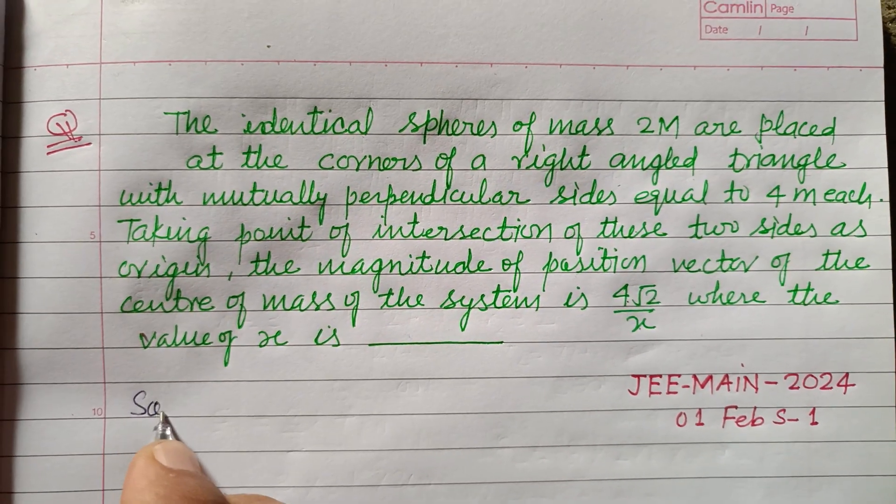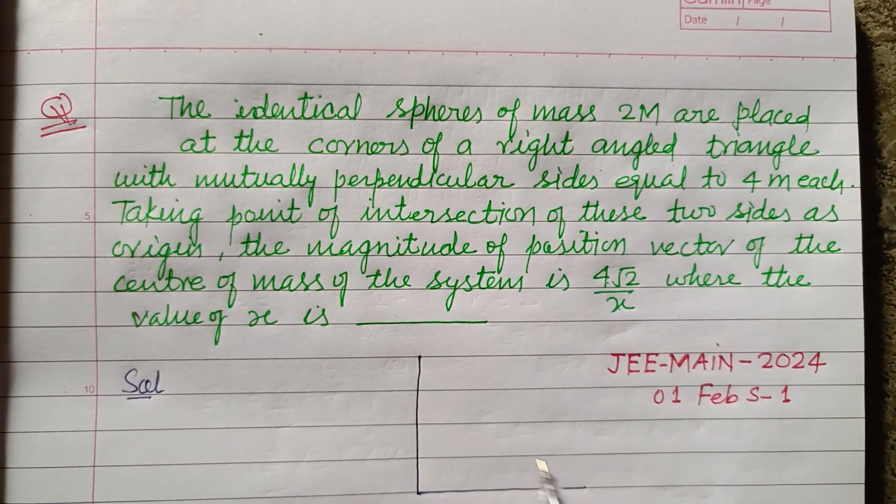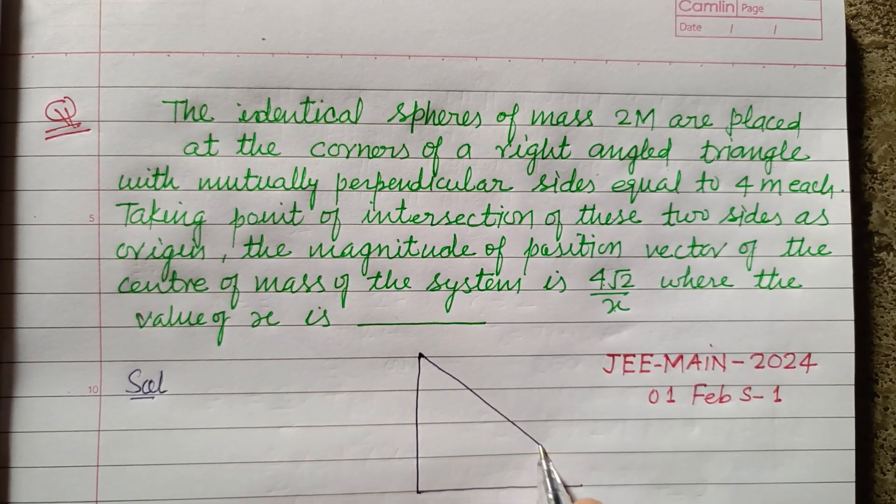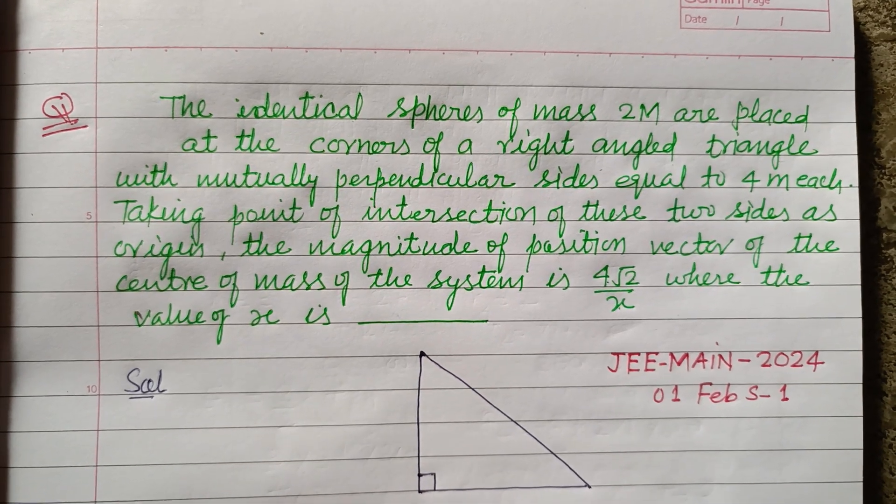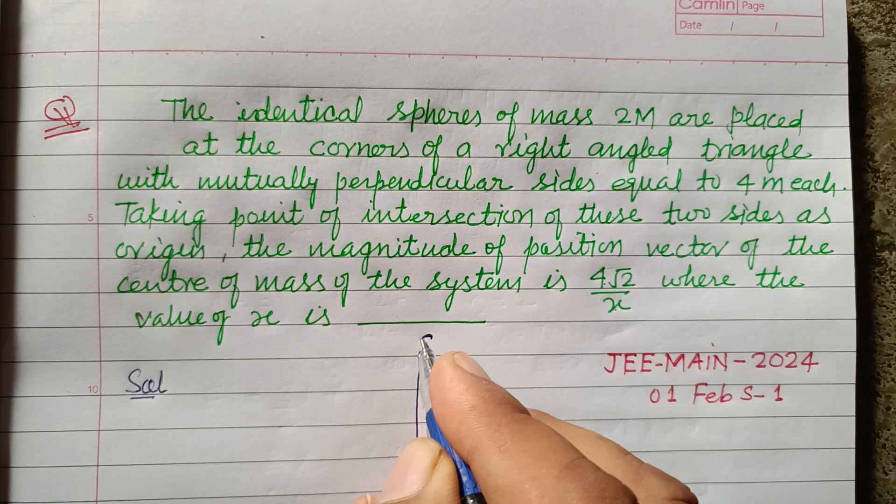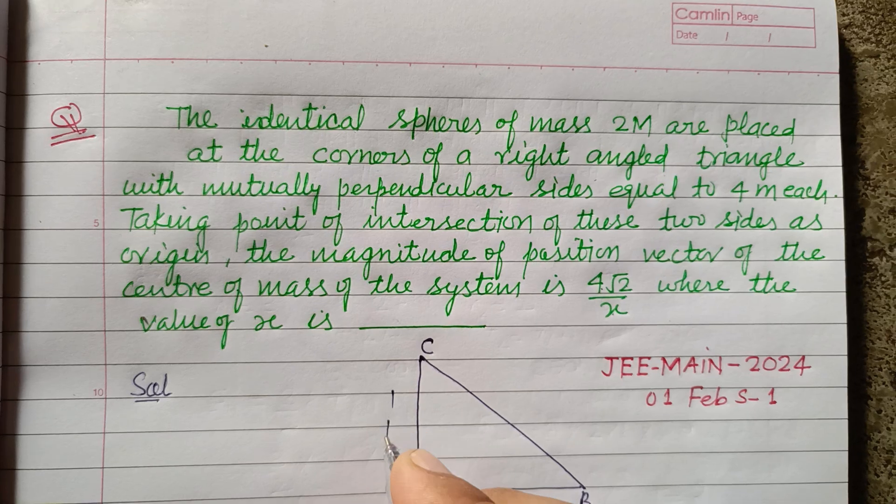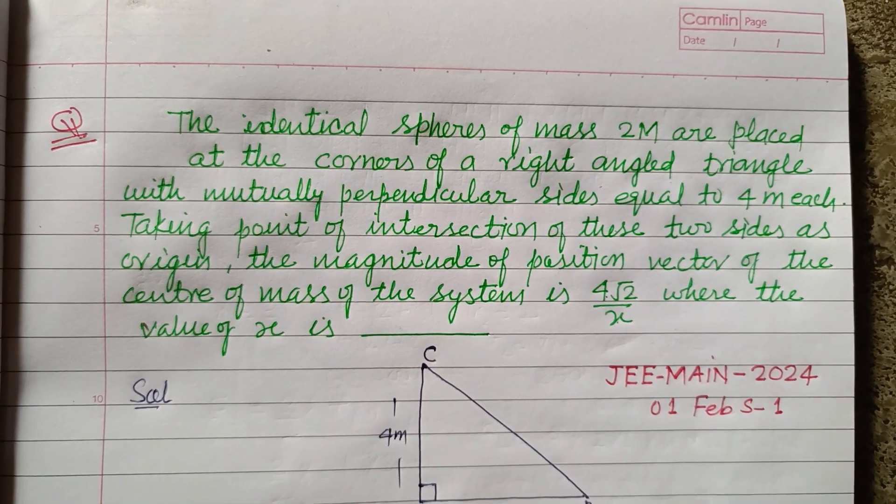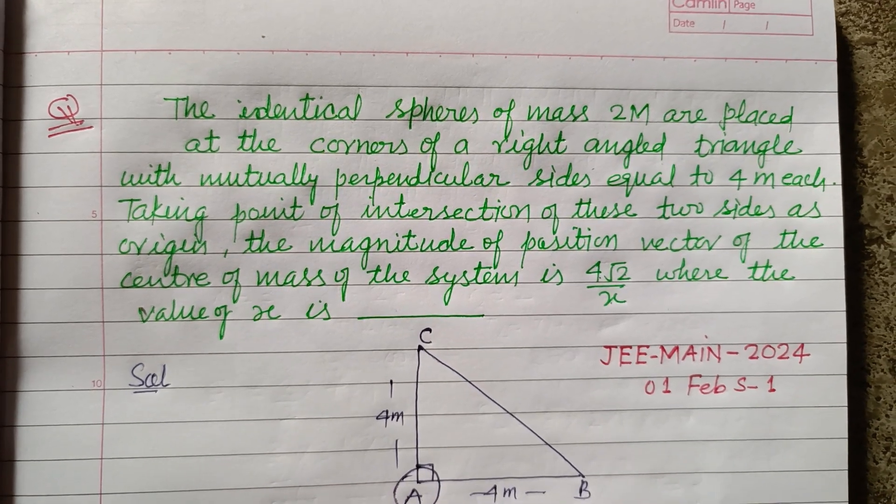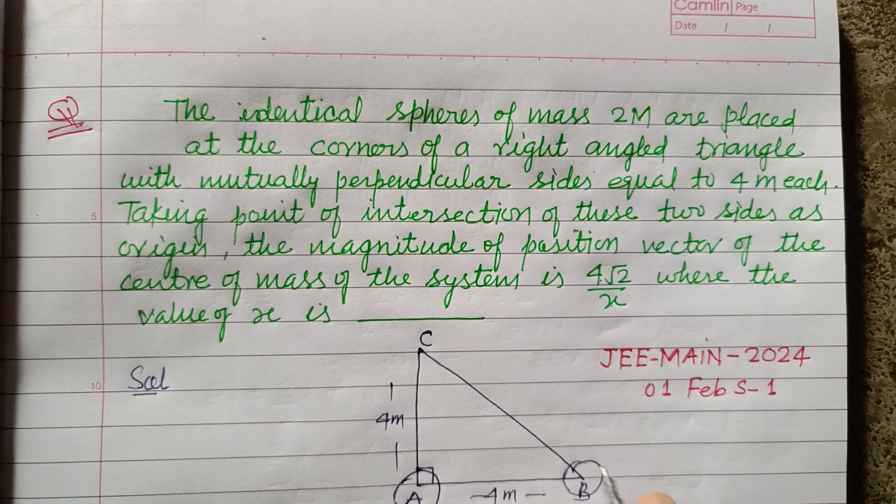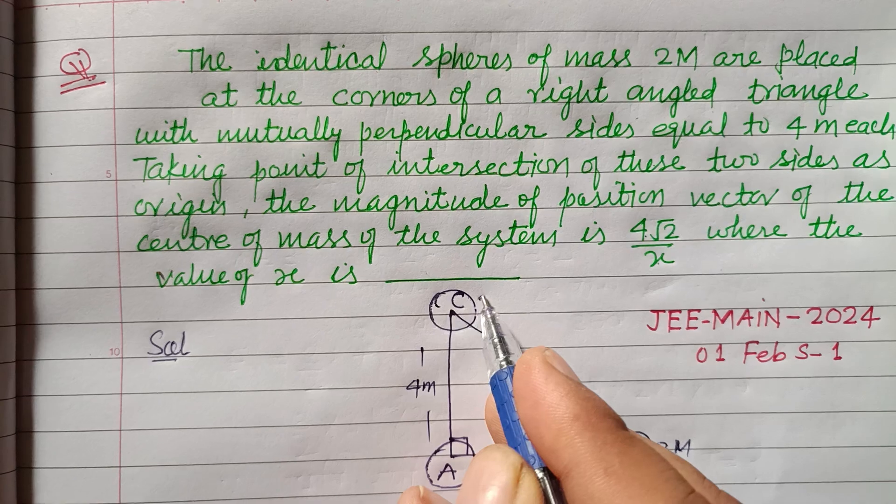So the question is saying that here is a right angle triangle with equal perpendicular sides. These are two perpendicular sides: this is A, this is B, and this is C. Its length is given 4 meters, this length also 4 meters, and spheres of 2m mass are placed at each corner of this right angle triangle.